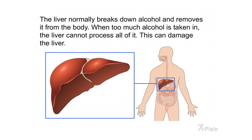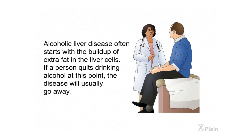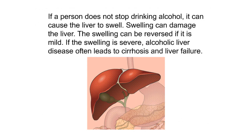The liver normally breaks down alcohol and removes it from the body, but when too much alcohol is taken in, the liver cannot process all of it, which can cause damage. Alcoholic liver disease often starts with the buildup of extra fat in the liver cells — if a person quits drinking at this point, the disease will usually go away. If a person does not stop drinking, the liver can swell and this can damage it. If the swelling is severe, alcoholic liver disease often leads to cirrhosis and liver failure.